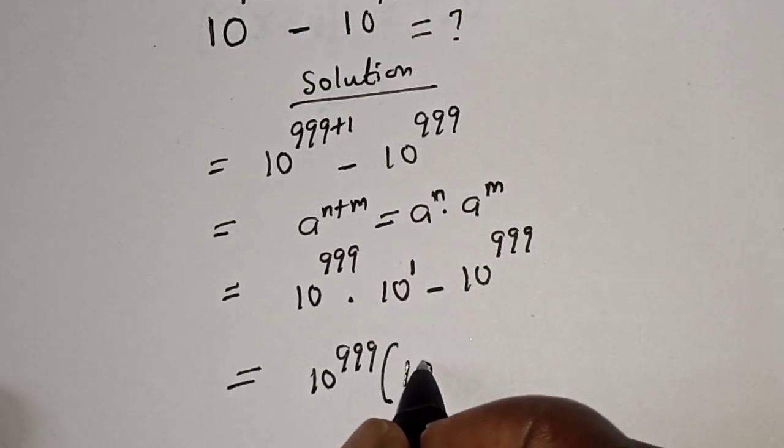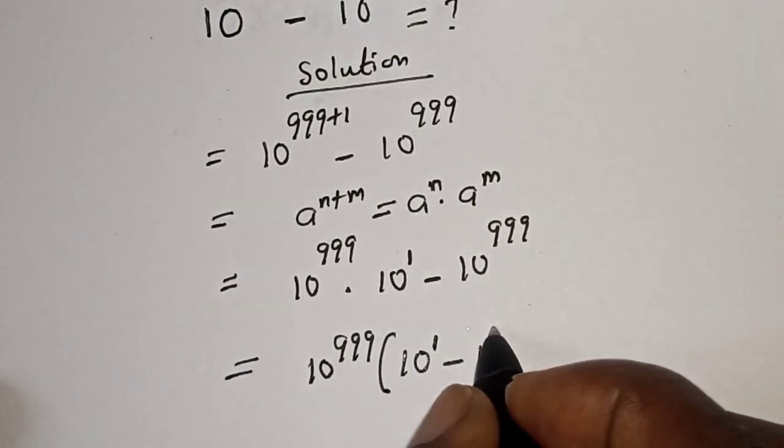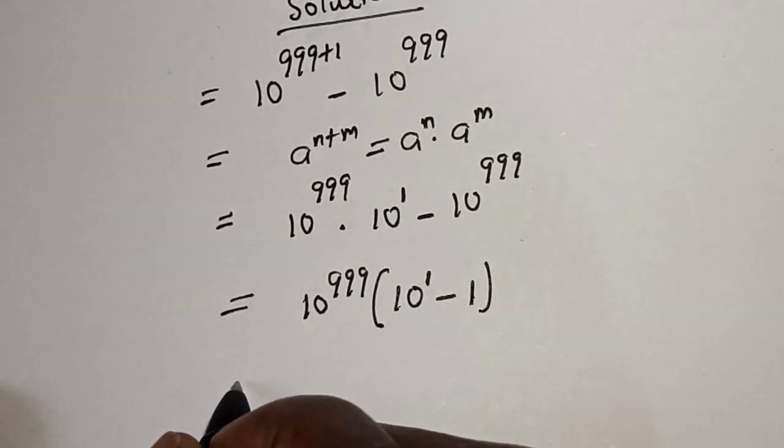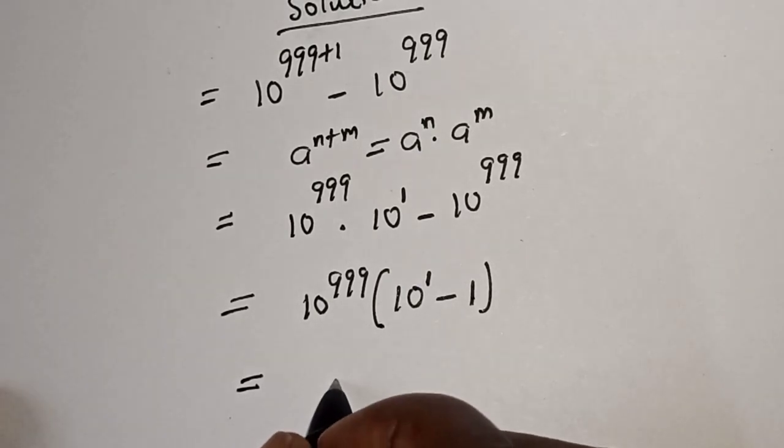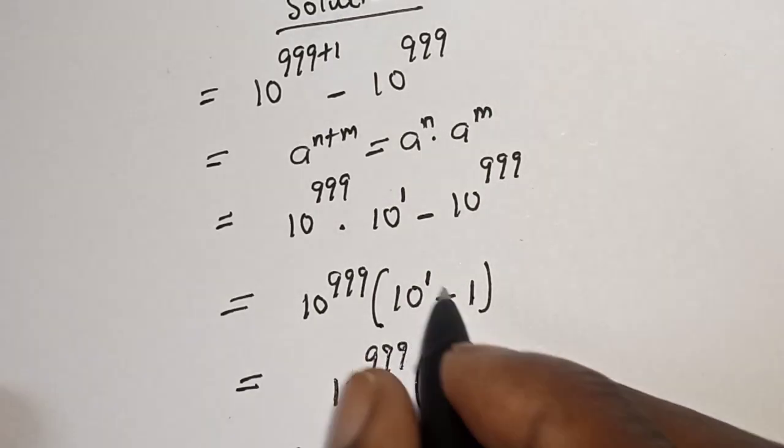We have 10 raised to power 999 in brackets: 10 raised to power 1 minus 1.